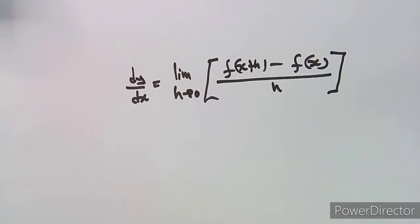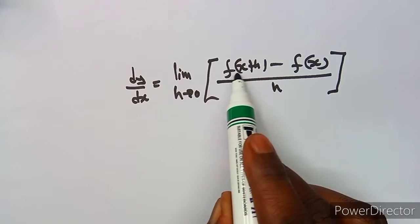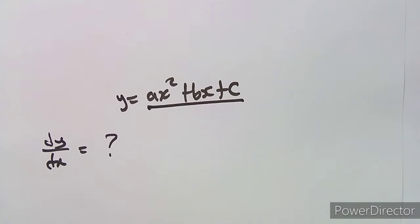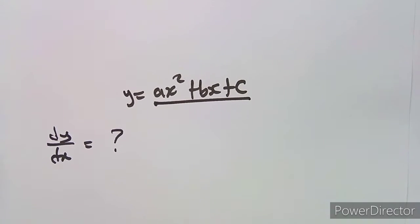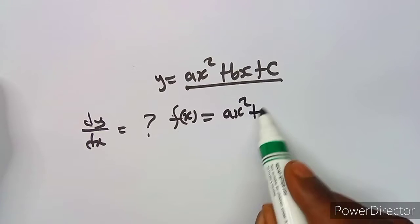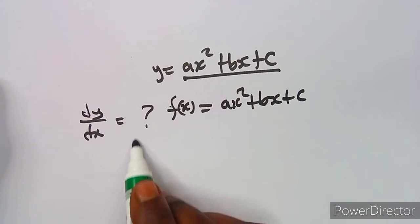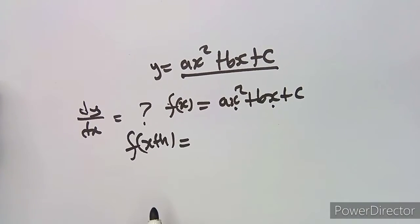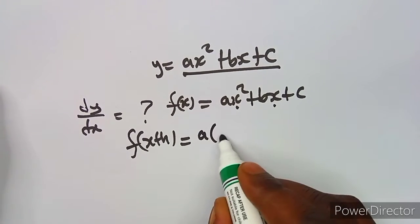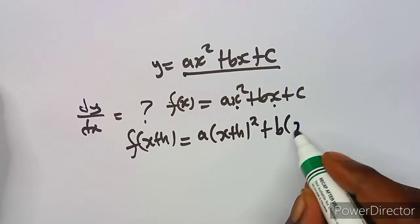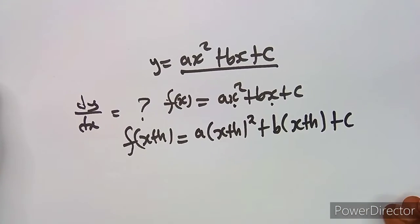This formula uses F(x+H) and F(x). F(x) is the normal expression you are given — the quadratic expression. In this case, F(x) is ax² + bx + c. For F(x+H), in place of x you substitute x+H, so it becomes a(x+H)² plus b(x+H) plus c.